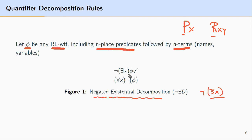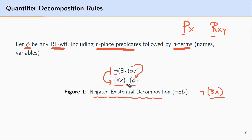If we have a negated existentially quantified formula, we can decompose it in terms of a universally quantified formula that ranges over φ. The negation that was originally on the outside is now on the inside of the universal quantifier. We're replacing this negated existentially quantified expression with a universally quantified expression that ranges over the negated φ — replacing this formula with one that's equivalent to it.